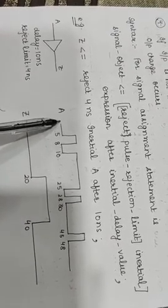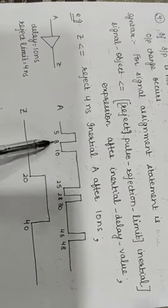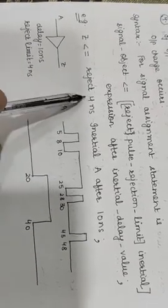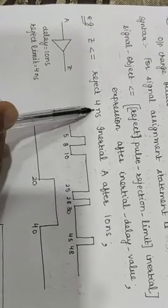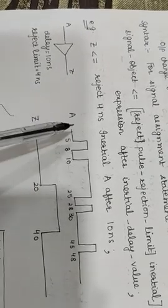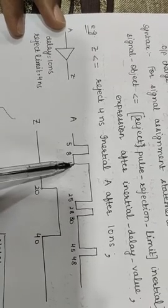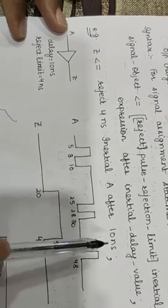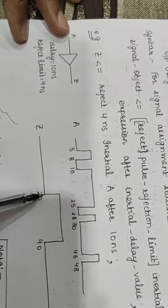The input starts at 0 and changes from 0 to 1. The next change has a time gap of only 3 nanoseconds, so it is not stable — less than the 4 nanosecond pulse rejection limit. Then at 10 nanoseconds, the value changes from 0 to 1 again, with a total time gap of 15 nanoseconds, which is greater than 4 nanoseconds. So the input waveform is stable at this point, and adding a delay of 10 nanoseconds means the output waveform is propagated at 20 nanoseconds.